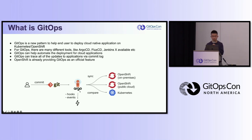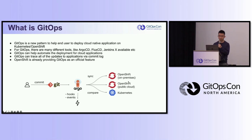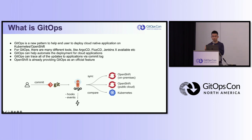From the diagram, we can see that with GitOps, the customer only needs to commit some PRs — like creating YAML files or other configuration files — and commit them into GitHub. Then GitOps tools like Argo CD or Flux will sync all the configuration into different platforms and manage your apps automatically, so you don't need to take charge of those apps manually. GitOps is already a built-in operator in OpenShift, so it's pretty simple to deploy GitOps components for your cluster.